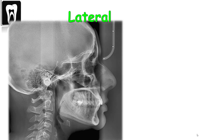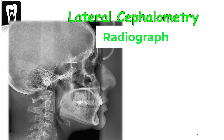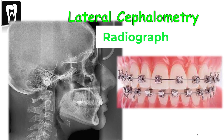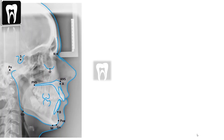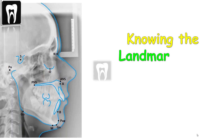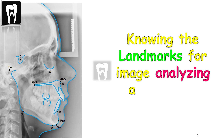A lateral cephalometric radiograph is a radiograph used primarily for orthodontic diagnosis and treatment planning. Tracing this radiograph is one step of the treatment plan. The first step in image analysis and tracing is knowing the landmarks.